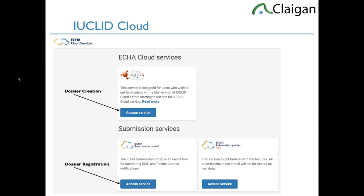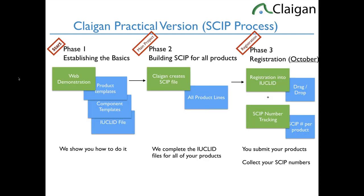The way we do this normally is basically three phases. The first one is we establish the basics. One of the common truths is everybody's starting point is different. There might be similarities between other companies, but what your products are, what data you have, what information you have, and what's the best way to work it are all different. Everybody starts at a different phase. There is no cookie-cutter solution.